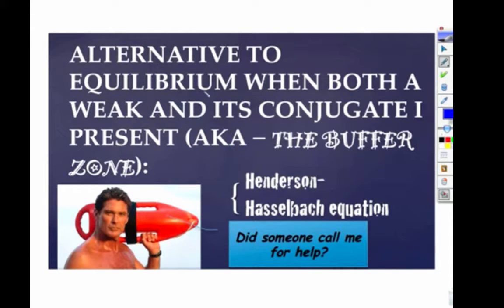Now I wanted to show you the alternative to having to do a full RICE. Some people don't teach it. I really like it. I'm not going to derive it, but if we took minus the log of both sides of a Ka or Kb expression, we would end up with what is called the Henderson-Hasselbalch equation. Not the David Hasselhoff equation, the Henderson-Hasselbalch equation.